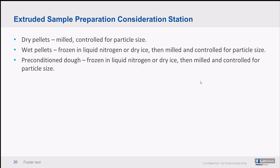For sample preparation with dry pellets, you simply grind them up and control for particle size to the extent possible. The PerkinElmer lab hammer mills are really good at this, especially because they don't impart a lot of additional heat to the sample. If it's a wet pellet or a preconditioned dough, you'll want to freeze it and minimize any retrogradation effects in order to represent where that product was in the cooking process at that particular point.